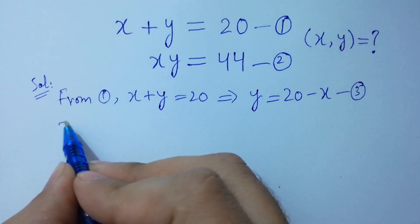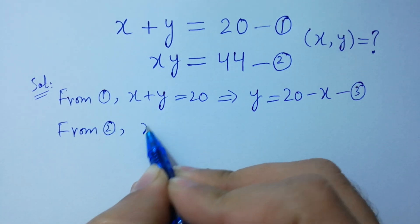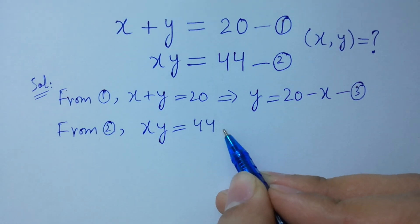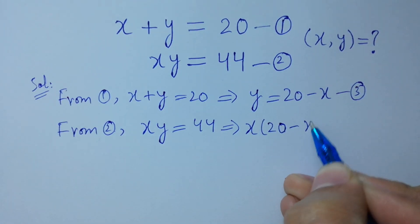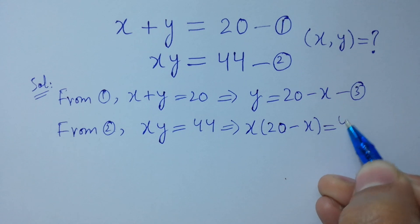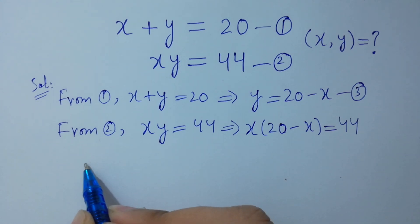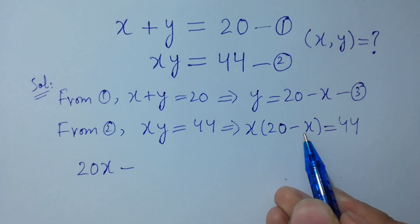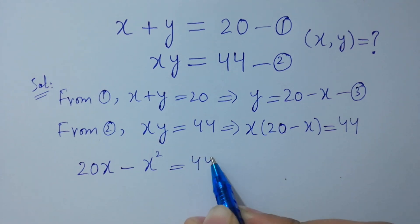From the second equation, x times y equal to 44. Put the value of y: x times (20 minus x) equals 44. Expanding: x times 20 is 20x, minus x times x is x squared, equal to 44.